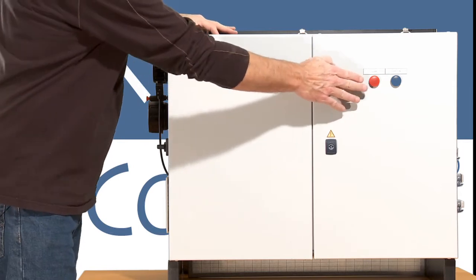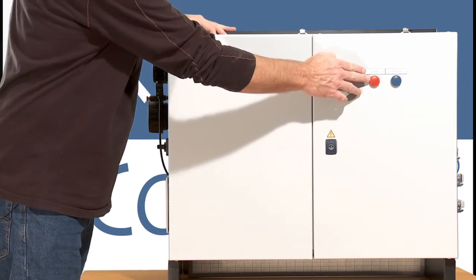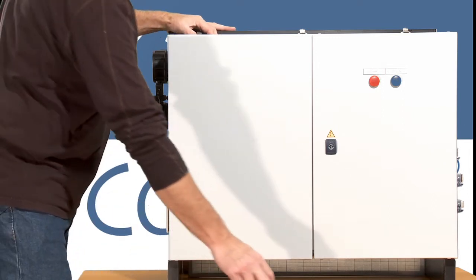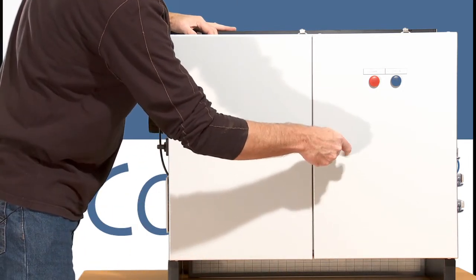The electrical cabinet is supplied with a red light for alarm indication and a green light for operation. The lock is opened.